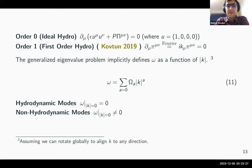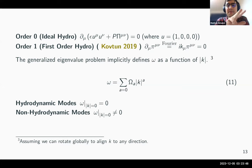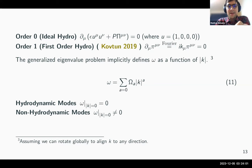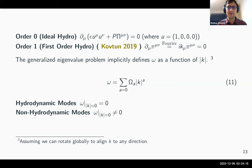At first order, the perturbation pi obeys conservation equations. You can count that it will be a second-order algebraic equation because you have one k from the partial derivative and another k from the first-order derivative term. This gives a generalized eigenvalue problem which implicitly defines omega as a function of k.